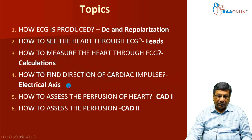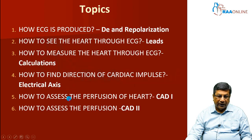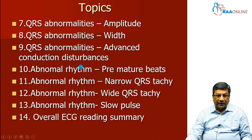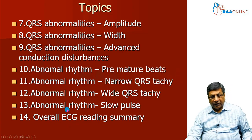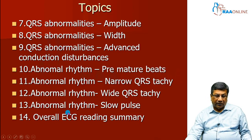Subsequently, we look at other programs. The next topics cover QRS abnormalities in the form of chamber enlargement, QRS abnormality in width, and QRS abnormality in fascicular blocks and advanced conduction disturbances. Then we come to coronary heart disease and assess the perfusion and viability of the heart. Then we look at abnormal rhythm or arrhythmias in four topics: premature beats, narrow QRS complex tachycardia, wide QRS complex tachycardia, and approach to narrow or slow pulse. The last topic gives an overall reading summary covering all 13 topics and how to read the ECG.